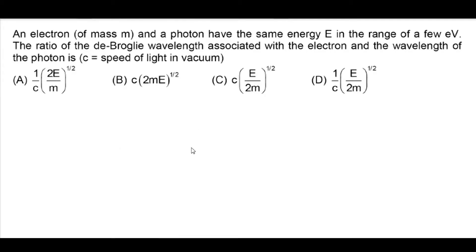An electron of mass m and a photon have same energy in range of few electron volts. An electron and a photon both have same energy. The ratio of de Broglie wavelength associated with electron and wavelength of photon is?